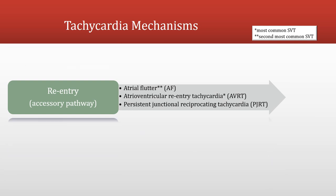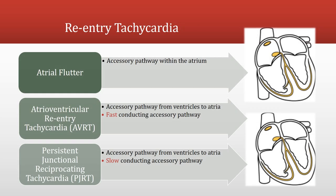Moving on to re-entry tachycardias, which have an accessory pathway. These tachycardias have a sudden onset and offset — they come on quickly and end quickly. In atrial flutter, the accessory pathway is within the atria, looping the signal and causing a quick atrial rate. In AVRT and PJRT, there is an accessory pathway from the ventricles to the atria. The difference is that AVRT has a fast conducting accessory pathway, whereas PJRT has a slow conducting accessory pathway, and we will see what that difference looks like on ultrasound images.